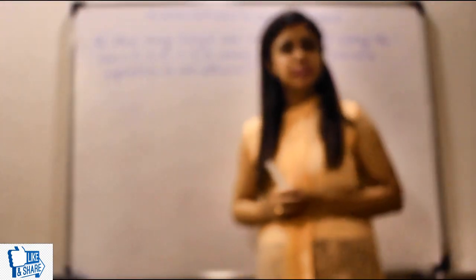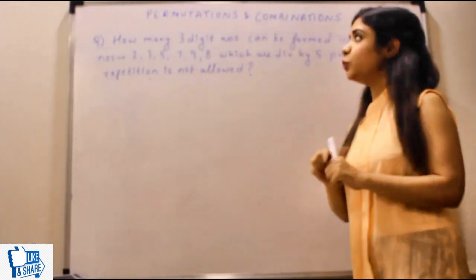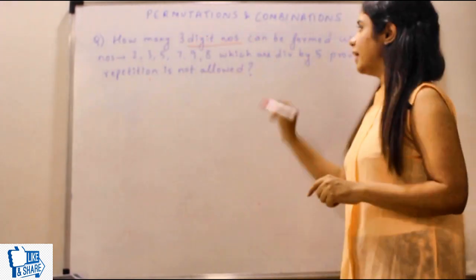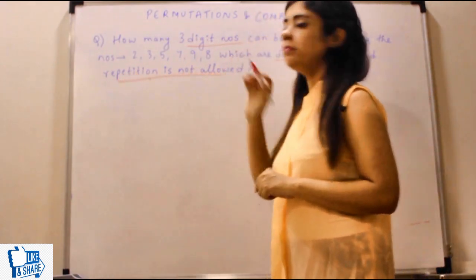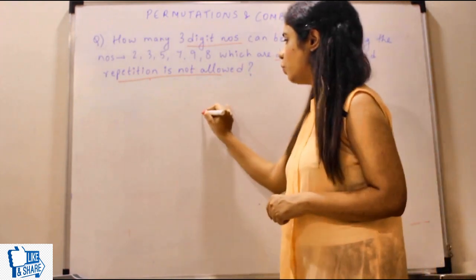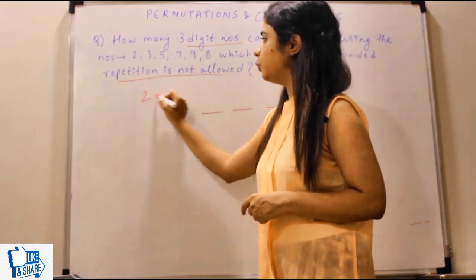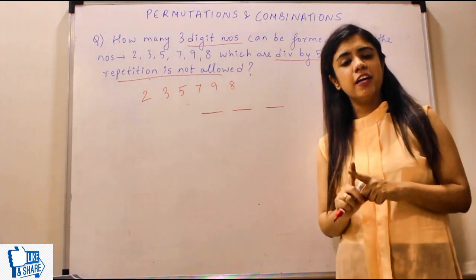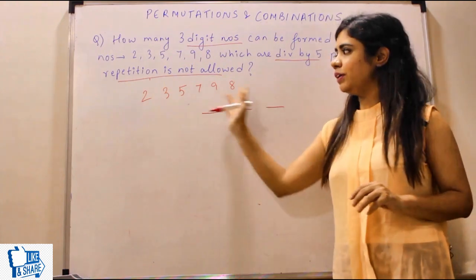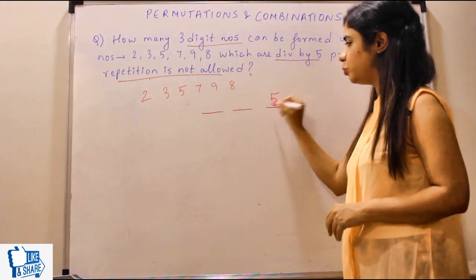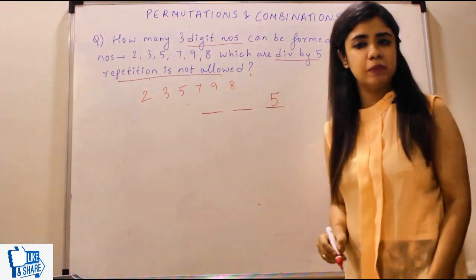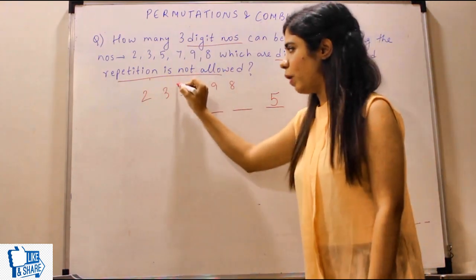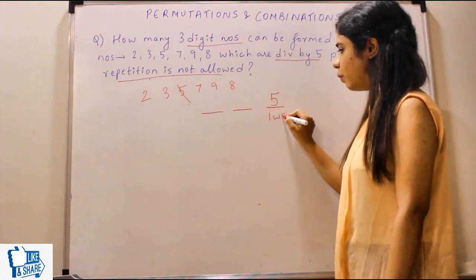Next problem: How many 3-digit numbers can be formed using the digits 2, 3, 5, 7, 9, 8 that are divisible by 5, provided repetition is not allowed? A number is divisible by 5 when the unit digit is 5 or 0. We don't have a 0 here, so strictly the unit digit must be 5. Since repetition is not allowed and there is only one 5, it can be placed in the unit position in only one way.